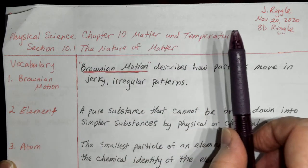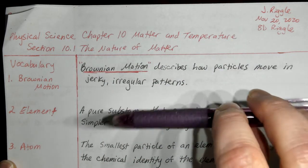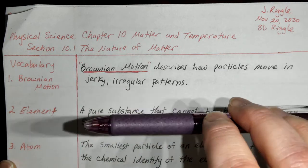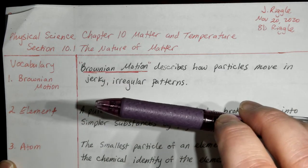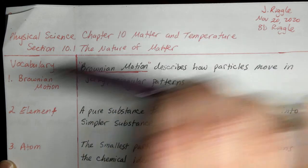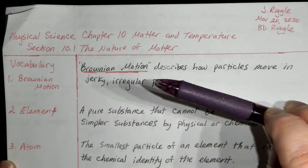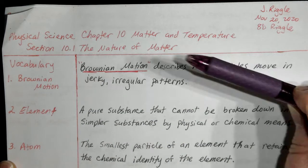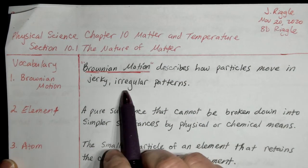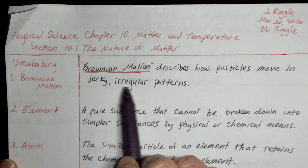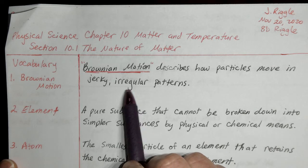If it just kind of flows — flowing, flowing, flowing — that's a flowing pattern. But if it goes, stops, jumps over there, stops, jumps over here, stops — that is a jerky pattern. And irregular means it doesn't necessarily follow a plan; it just kind of goes where it wants to.